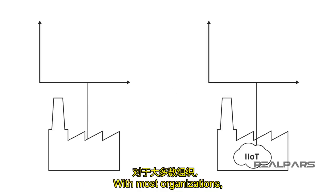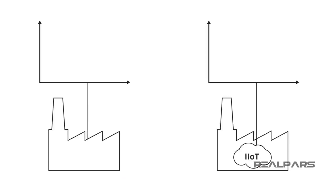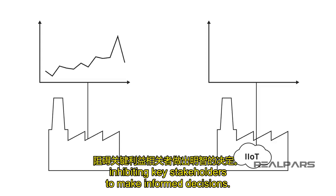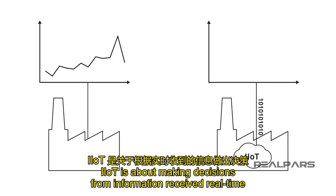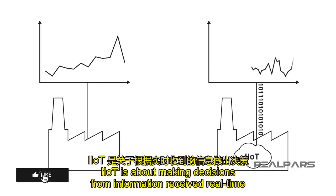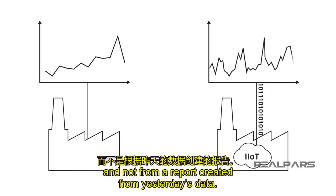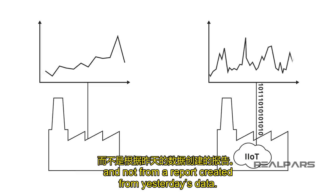With most organizations, the data is not real-time and lacks efficiency, inhibiting key stakeholders from making informed decisions. IIoT is about making decisions from information received real-time, and not from a report created from yesterday's data.